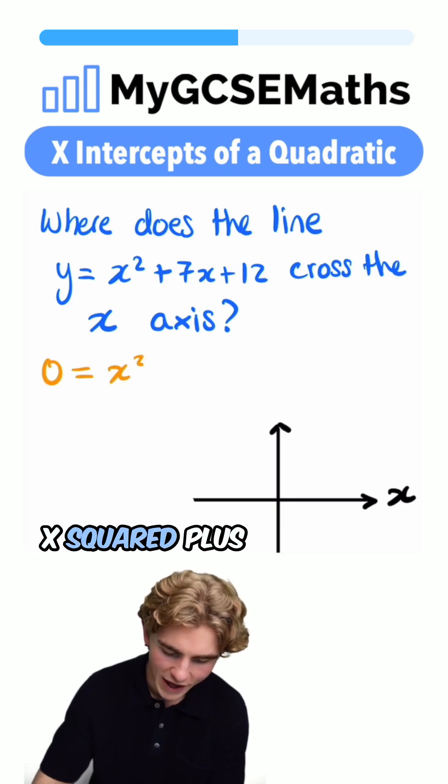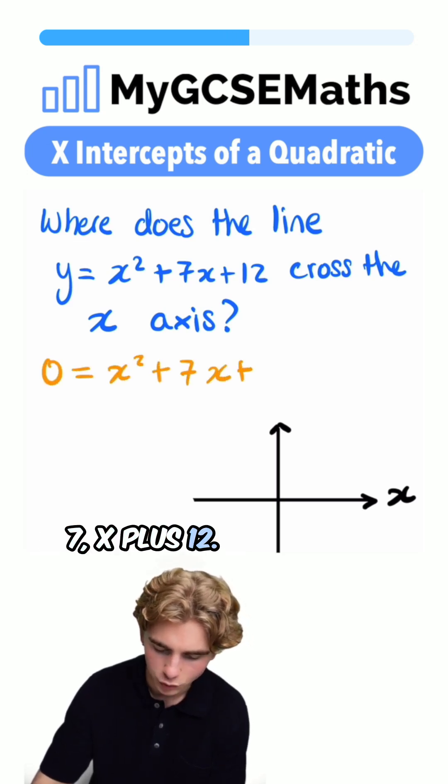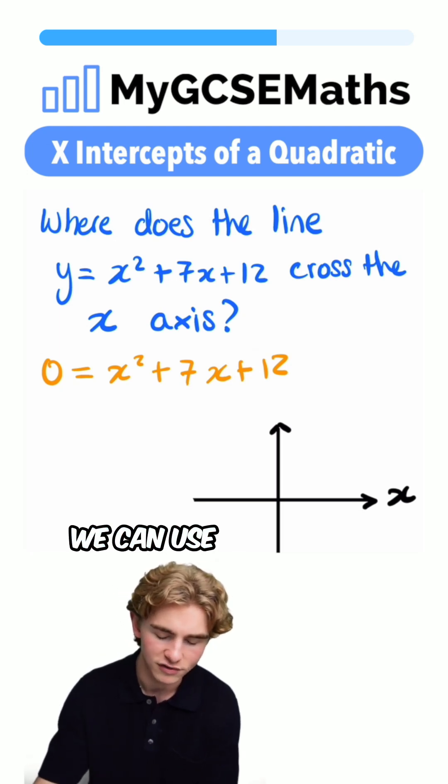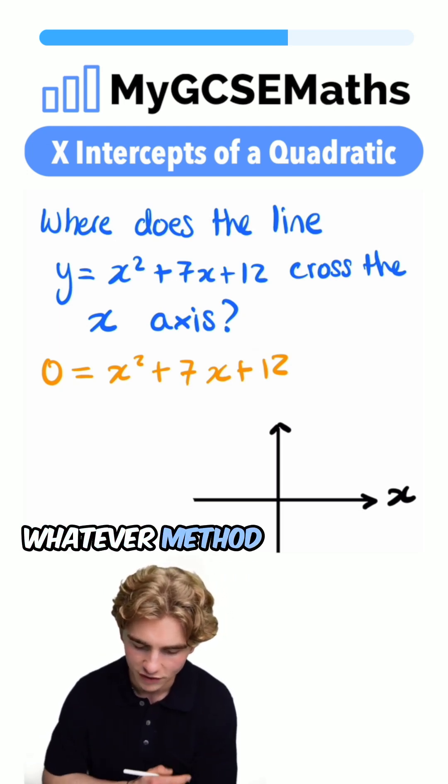We get 0 equals x squared plus 7x plus 12. Now we have a quadratic equation equal to 0 which we can solve. We can use the formula or factorize or use whatever method we want.